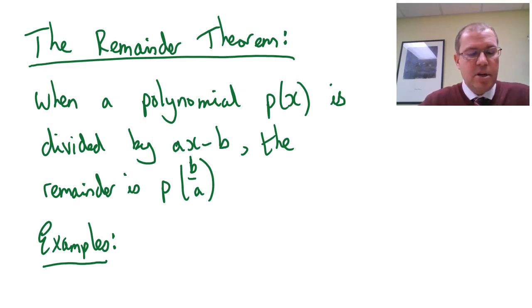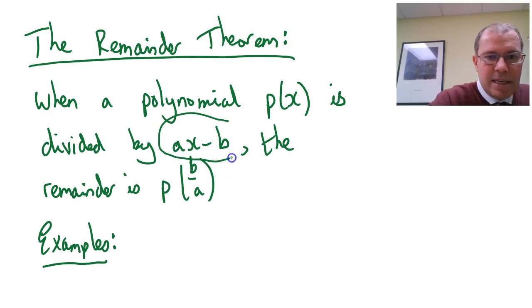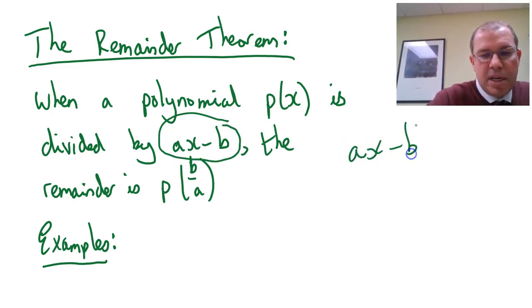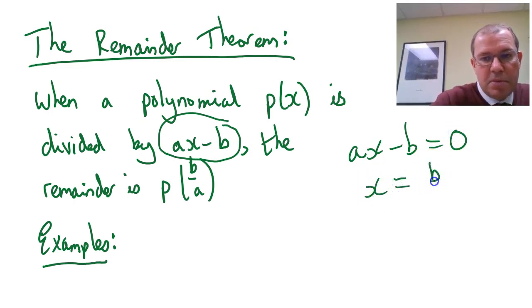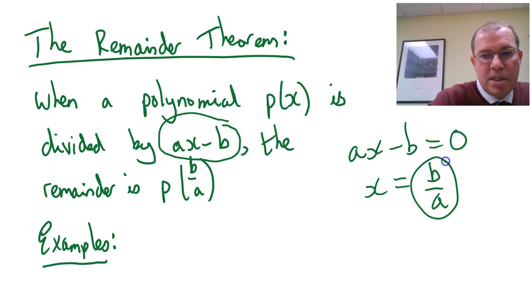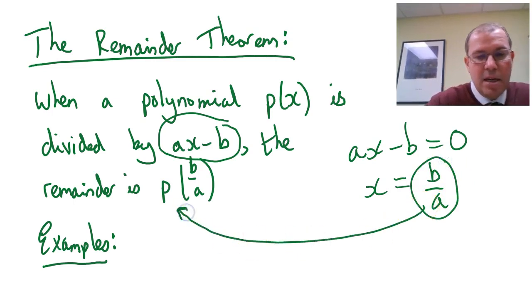So let's start with the remainder theorem. When we have a polynomial P(x) and it's divided by a divisor ax-b, the remainder is P(b/a). In other words, if you make ax-b, your divisor, equal to 0 and solve for x, which would be b/a, and put that into the polynomial P, then the number that you get out is actually the remainder when you were to do the long division, P(x) divided by ax-b.